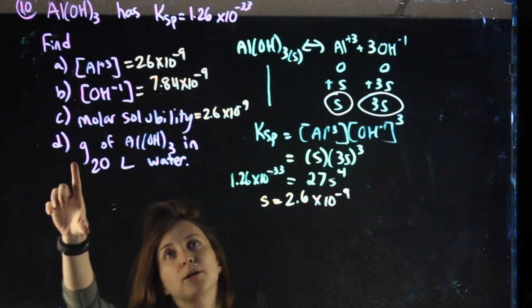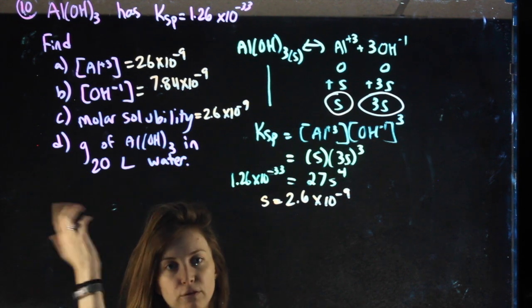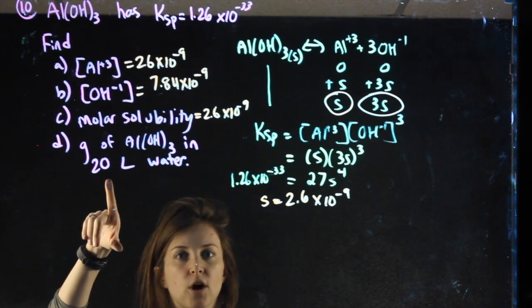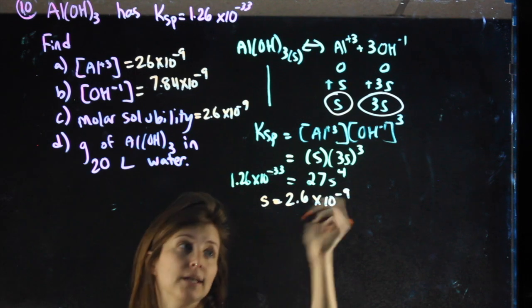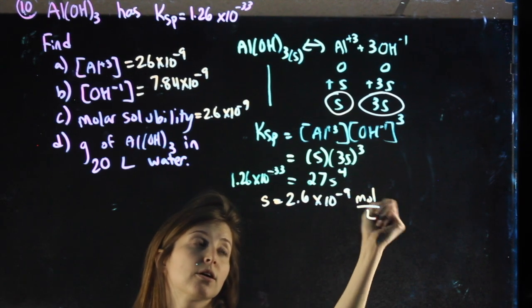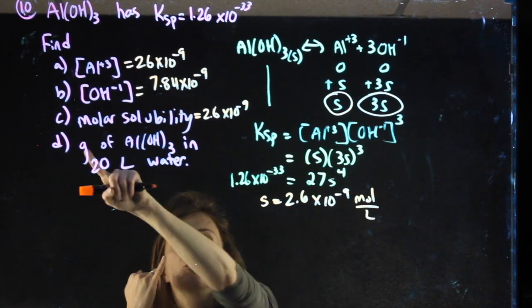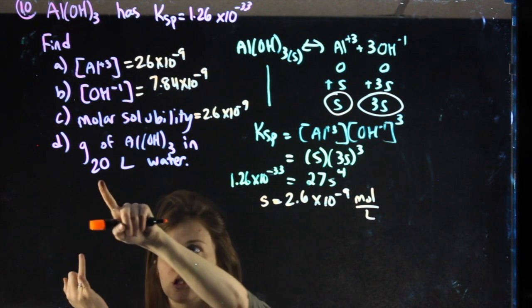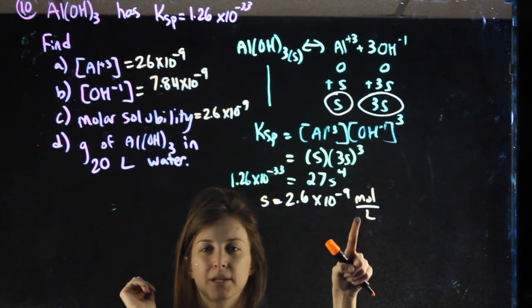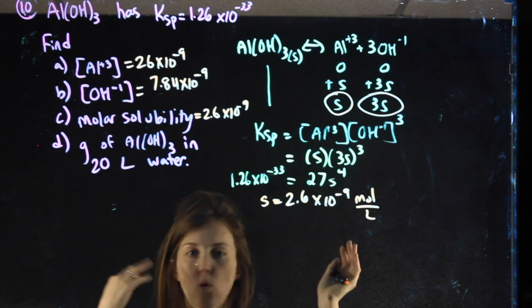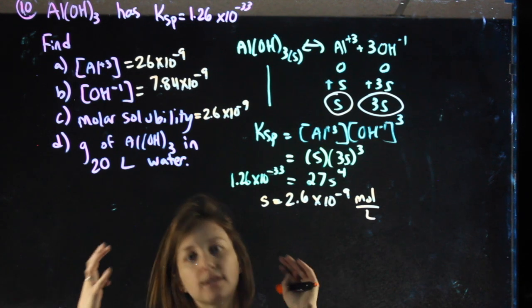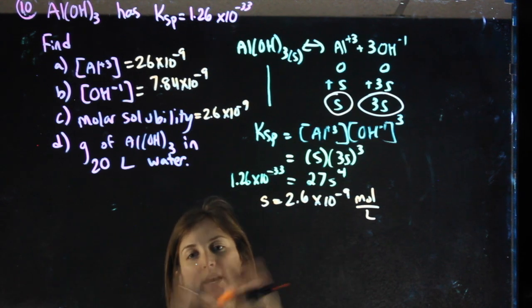Then, it asks how many grams of aluminum hydroxide can dissolve in 20 liters of water. Well, we know that this is my solubility in moles per liter. I have to get it to grams instead of moles, and I have to get it to 20 liters instead of 1 liter. The order you do that in doesn't matter, it's going to be mathematically the same steps.